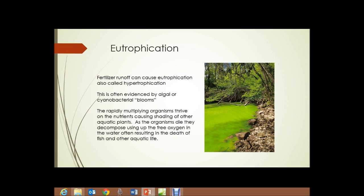Fertilizer runoff can cause eutrophication, also referred to as hypertrophication, and it's often evidenced by algal or cyanobacterial blooms. You can see in this photograph the green color of the water in various shades of green. It's not the water itself — it's the result of billions and billions of cyanobacteria in the water, multiplying because of the amount of nutrients that have run off from surrounding fields.